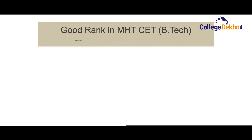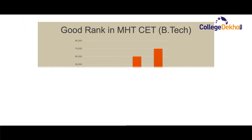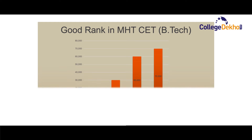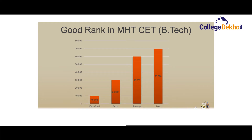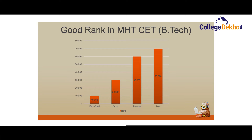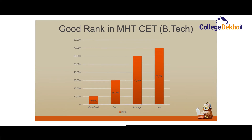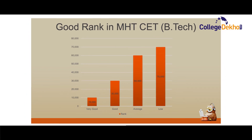Now, let us know what is a good rank in MHT CET for B.Tech admission. A very good rank for B.Tech admission is between 1 to 10,000. A rank of 10,000 to 30,000 can be considered a good rank. A rank of 30,000 to 60,000 can be considered an average rank, and a rank above 60,000 can be considered a low rank.